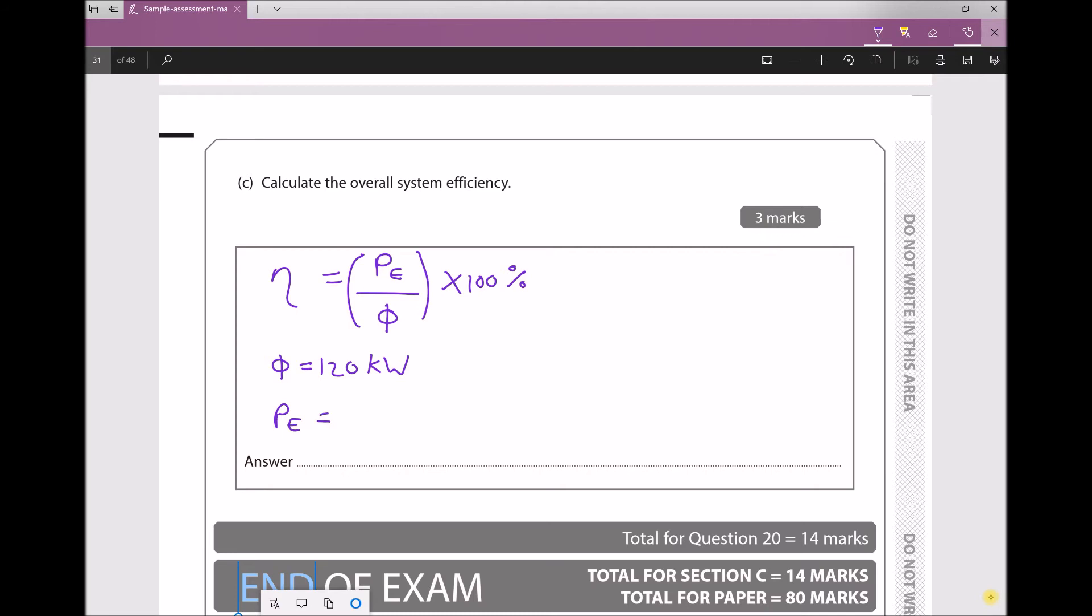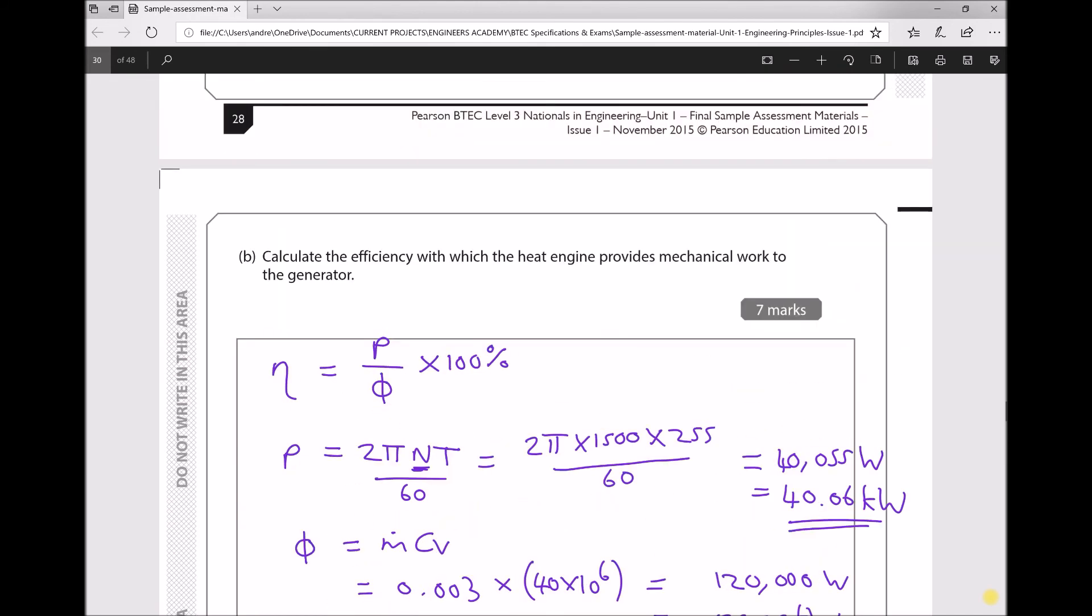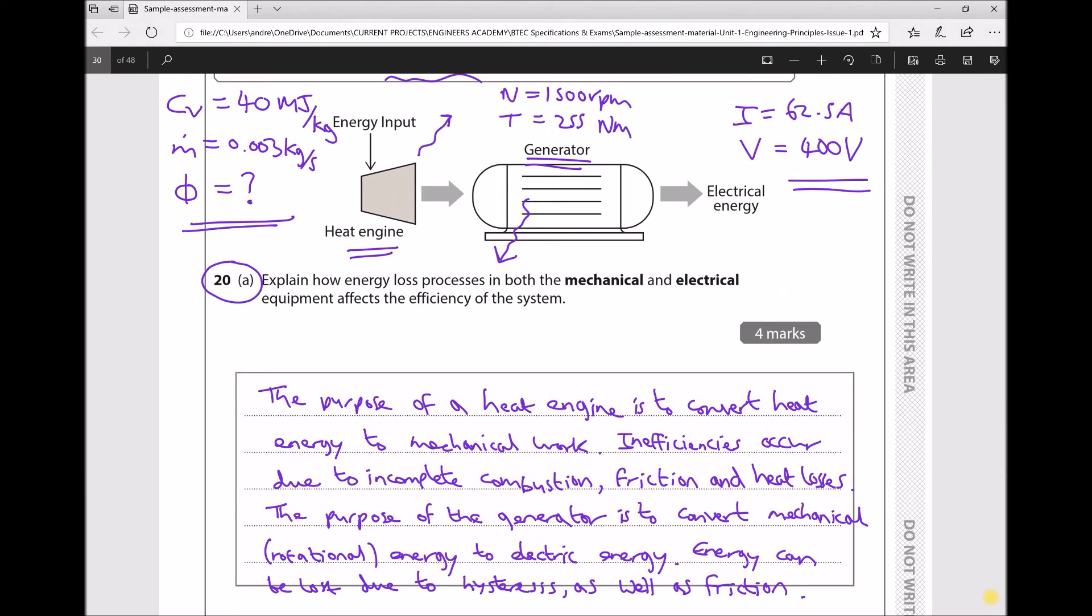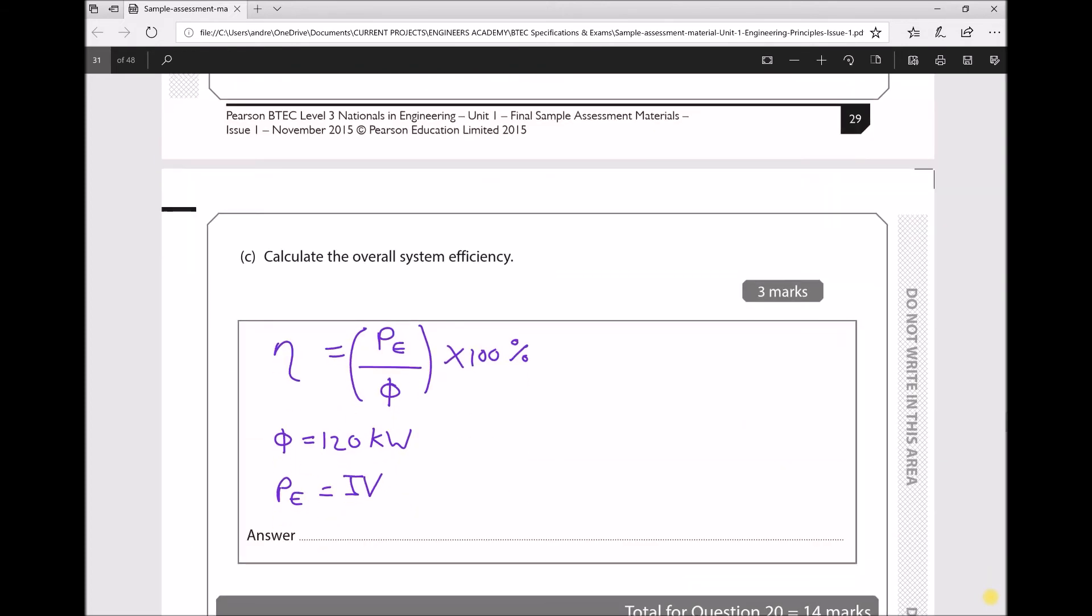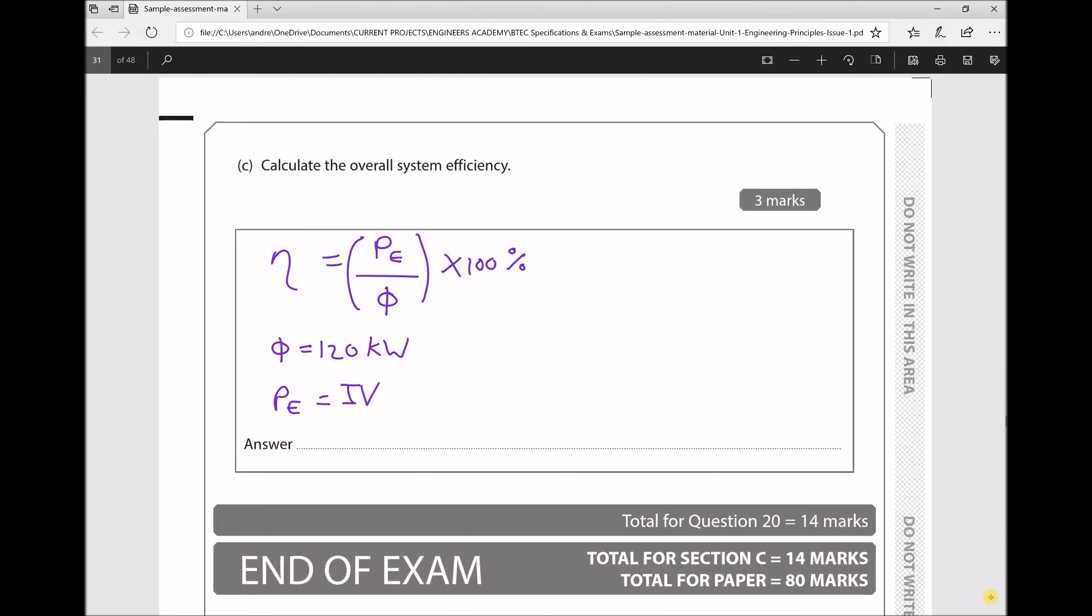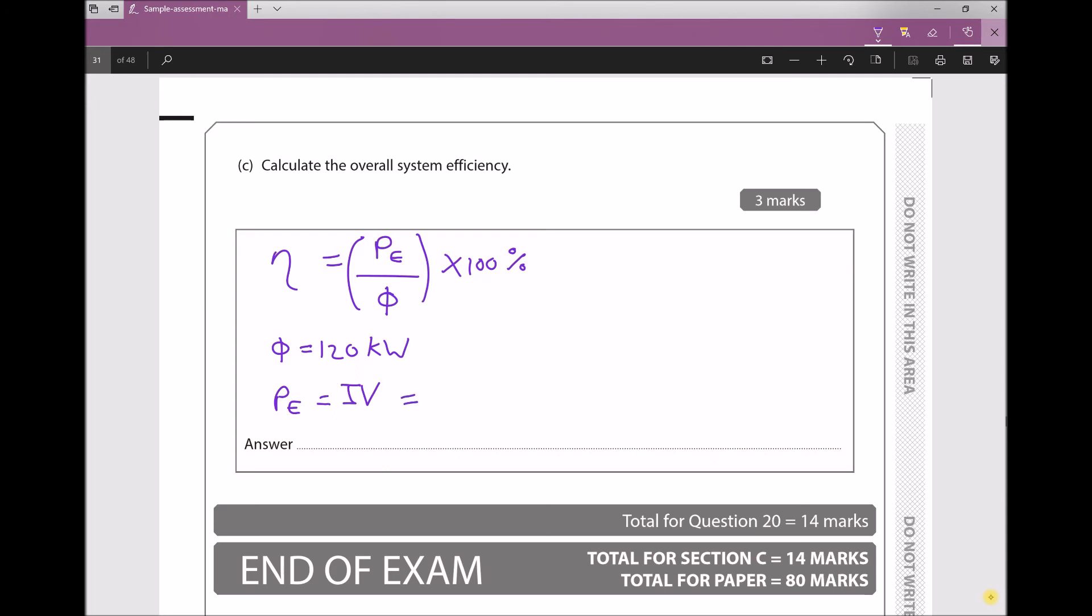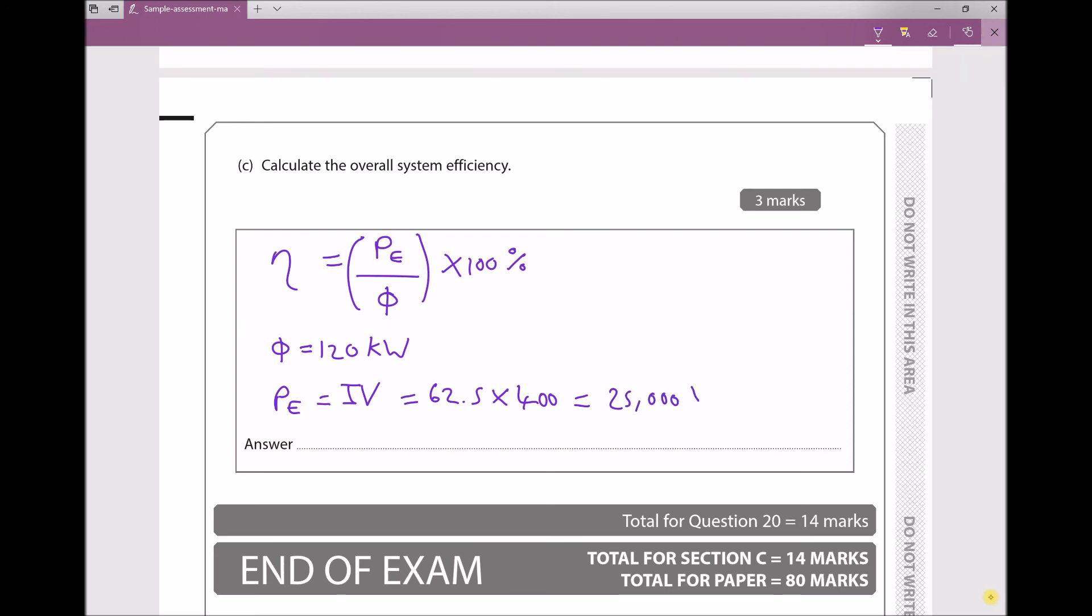But we need to calculate PE. And the formula for PE, electrical power, is current times voltage or voltage times current, either way around. Now checking back on our question, we have a current equal to 62.5 and a voltage equal to 400. So back down here, we have a current of 62.5 and a voltage of 400, giving us an electrical power output equal to 25,000 watts or 25 kilowatts.